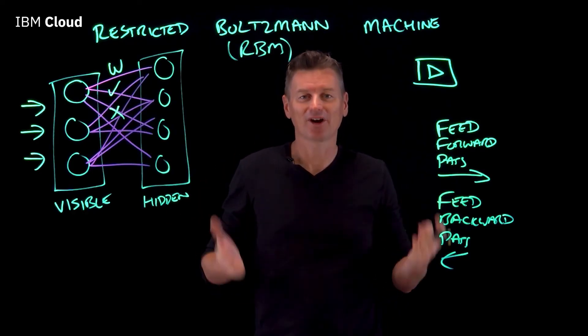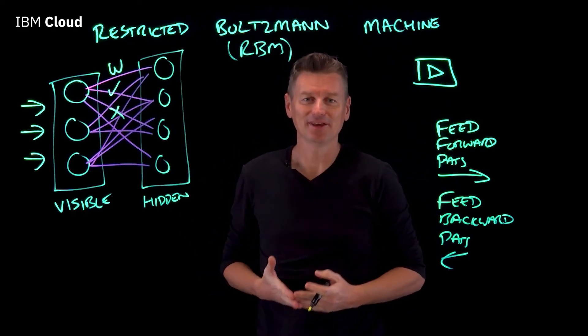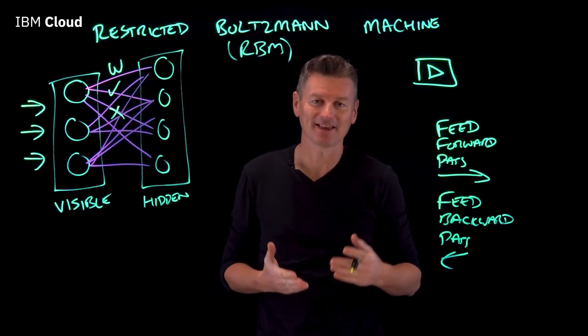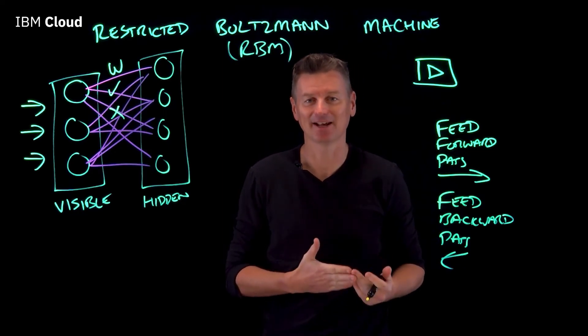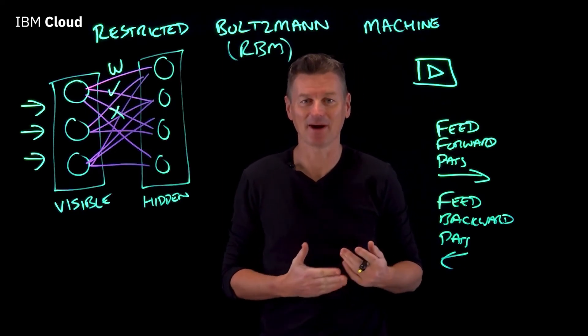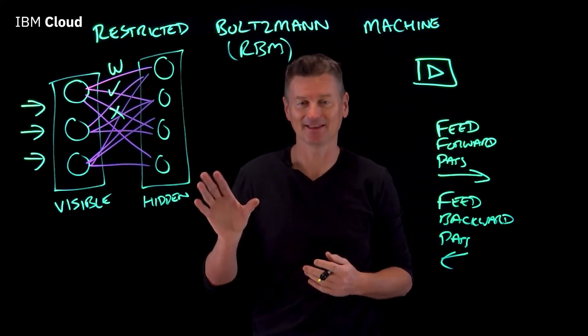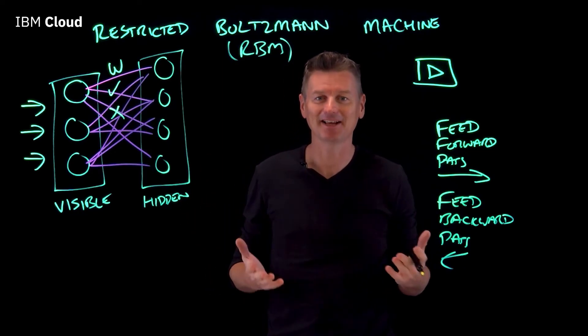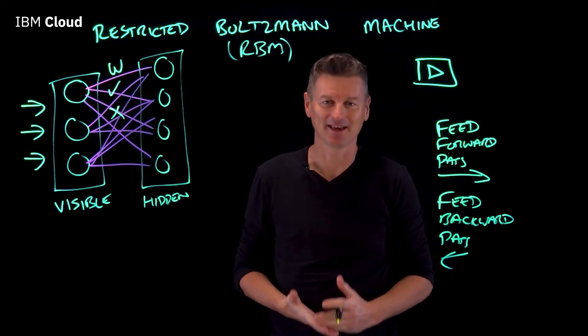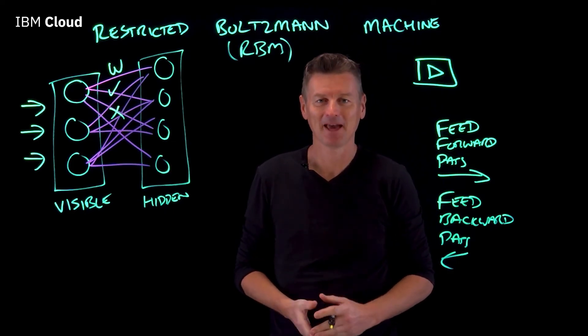Putting enough training data through these two phases teaches us the pattern that is responsible for activating the hidden nodes. We're basically learning the probability distribution across a data set.